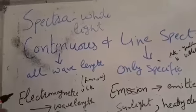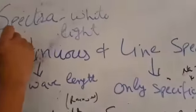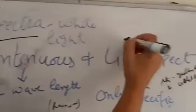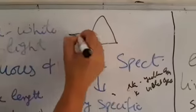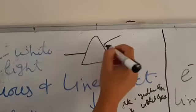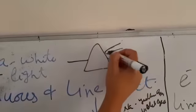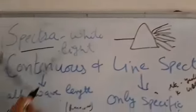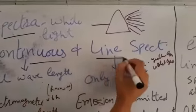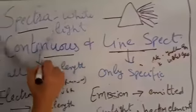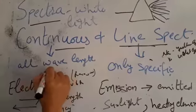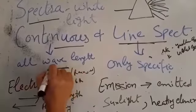Hello students, like yesterday we have started spectrum or spectra. When white light is passed through a prism, it splits into a beautiful colored band which is known as a spectrum. And this spectrum is of two types: continuous and line spectrum. Continuous spectrum means when all wavelengths are absorbed or emitted.